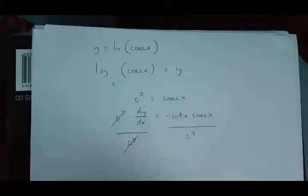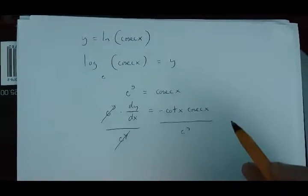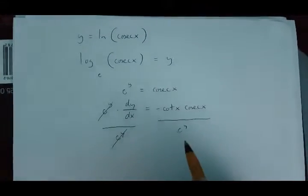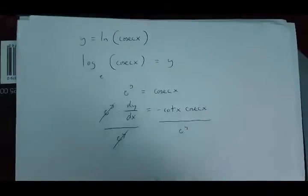If we do this, we get dy over dx equals minus cot x times cosec x over e to the power of y. But it turns out that e to the power of y is cosec x.